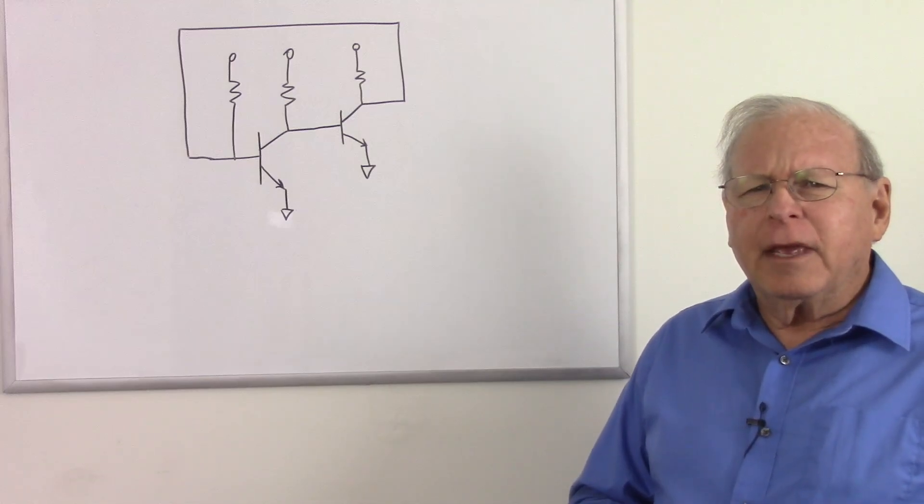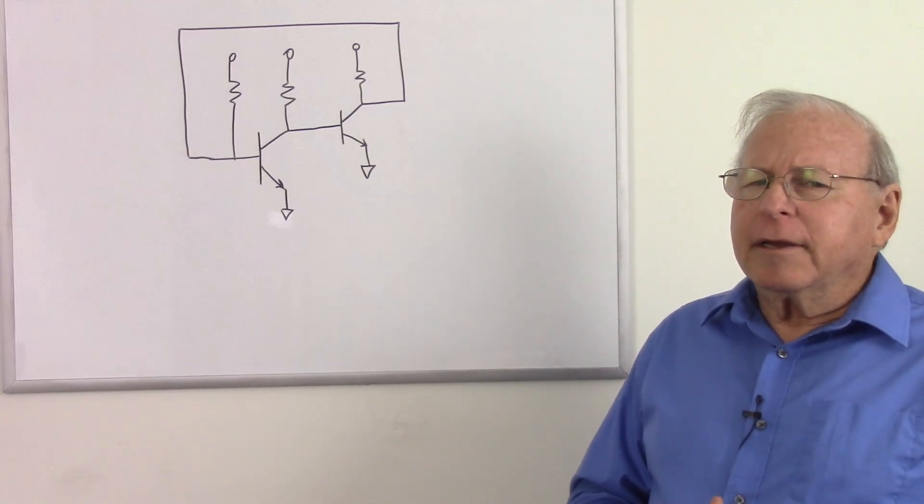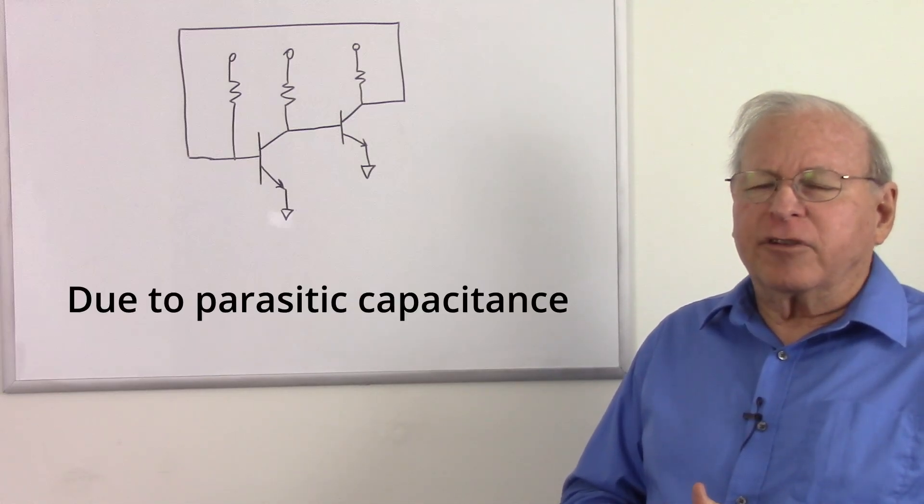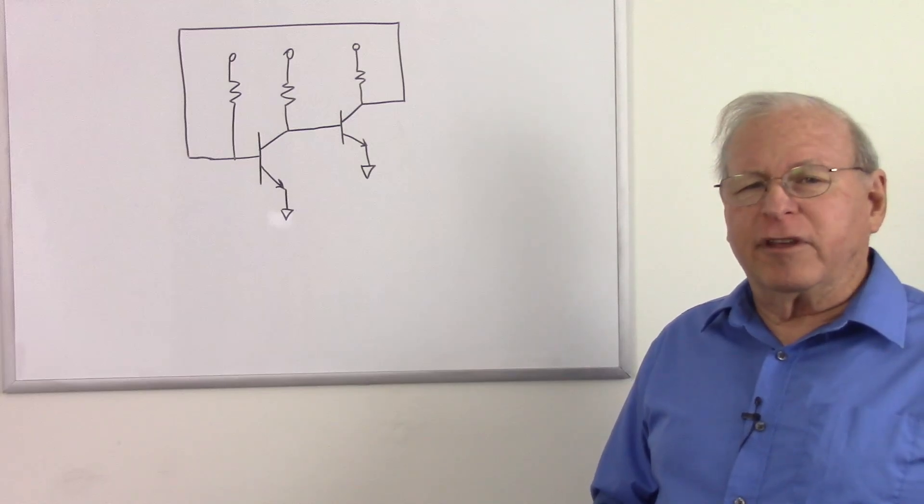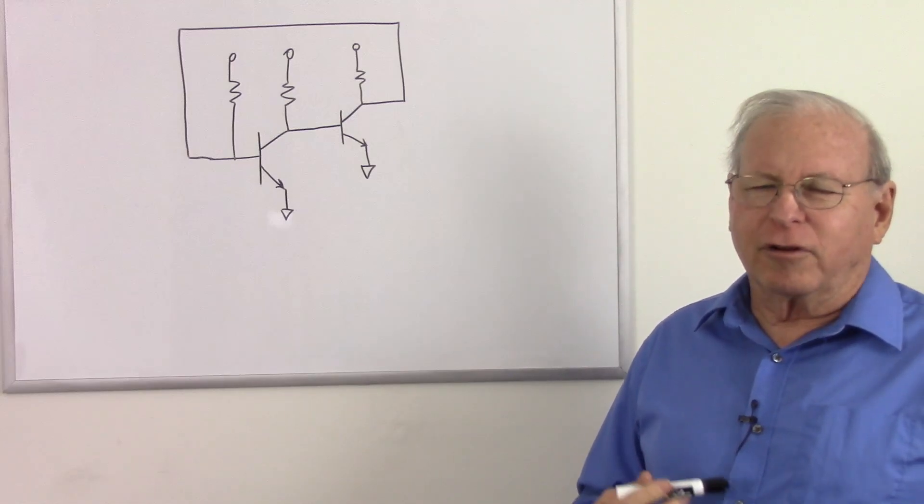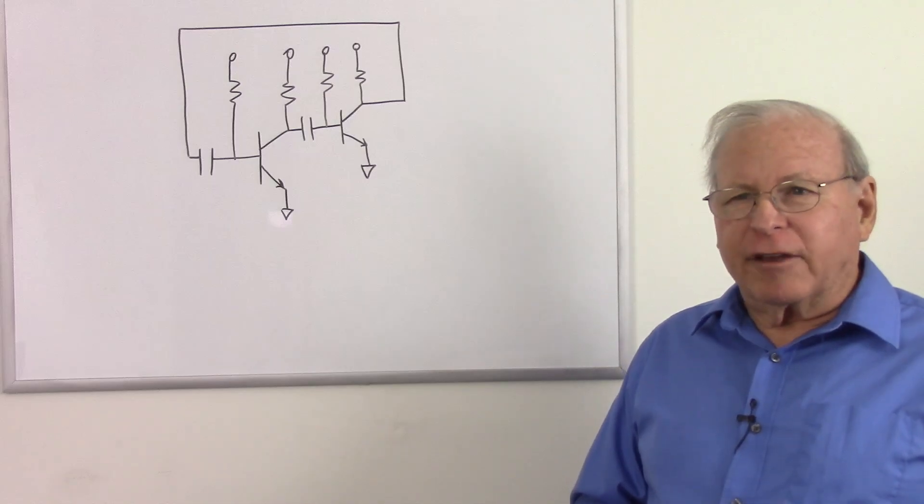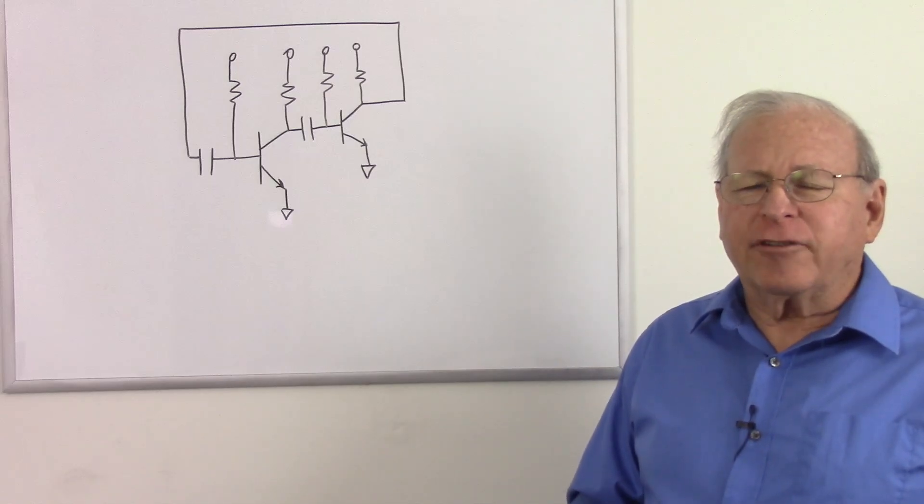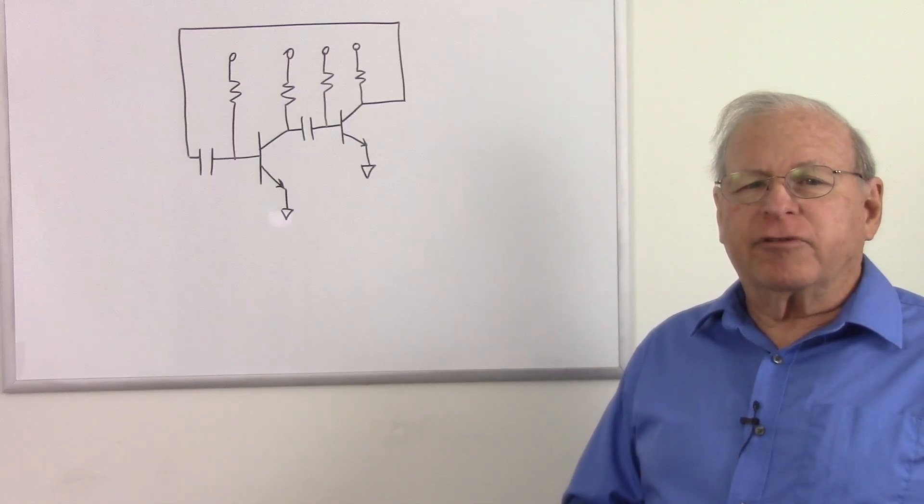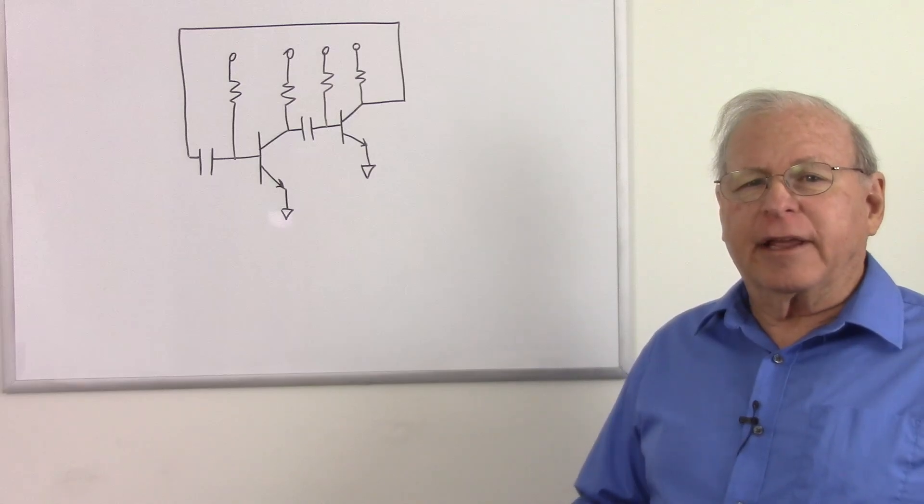But this is the astable multivibrator just minus the capacitors. Will this oscillate? It probably would, but probably at a very high frequency and maybe such a high frequency that the transistors really couldn't respond, so it really wouldn't oscillate. But by putting these two timing capacitors in here, we increase the capacitance and thus lower the frequency it wants to oscillate at, and we get an oscillator.